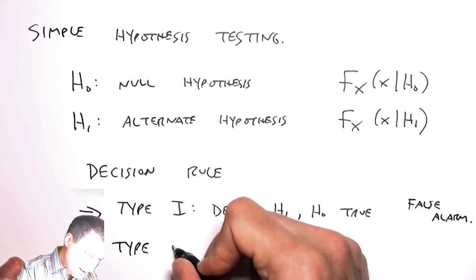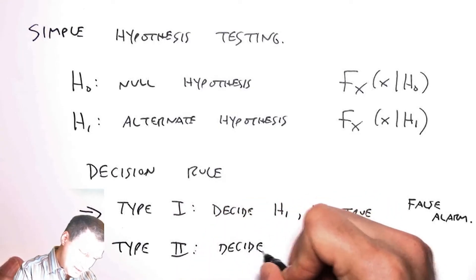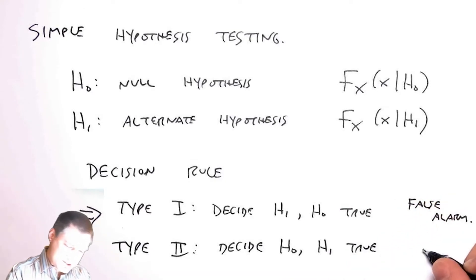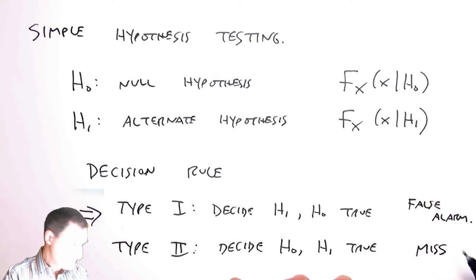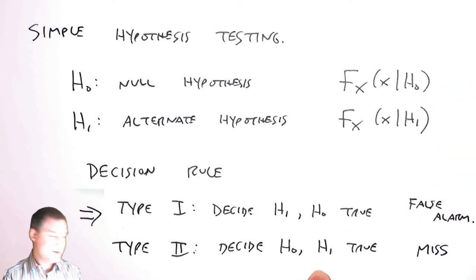And a type 2 error is when I decide that nothing was happening when actually something was happening. That's like a miss. And so both of these have kind of real-world implications for missing something or detecting something. So we're going to talk about how we assign some costs to these in a minute.